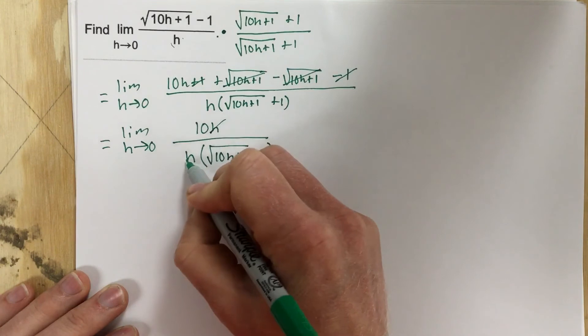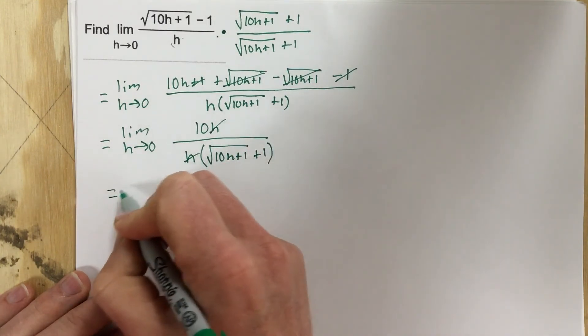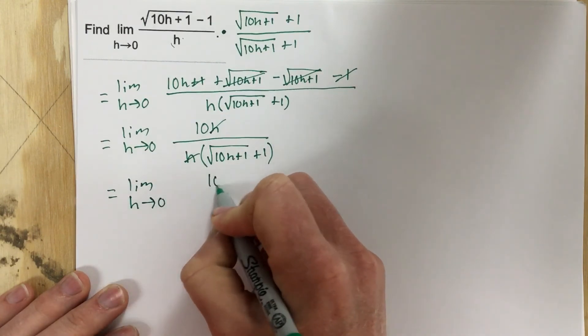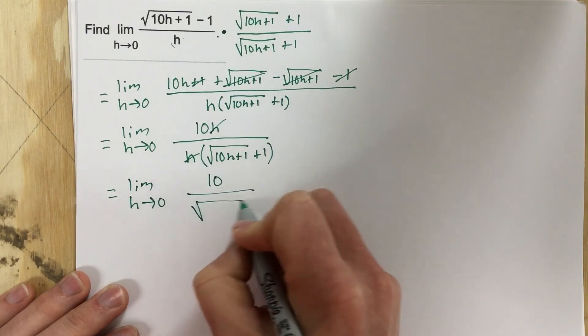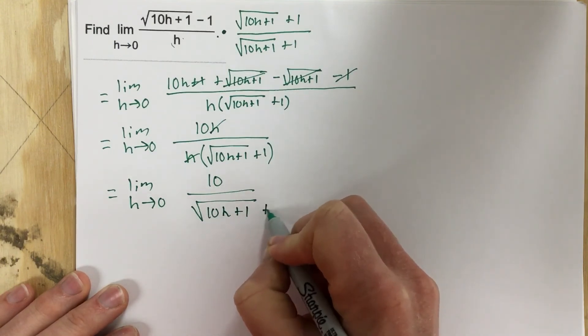You can see that the h's are going to cancel there. And I'm left with limit as h approaches 0 of 10 over root 10h plus 1 plus 1.